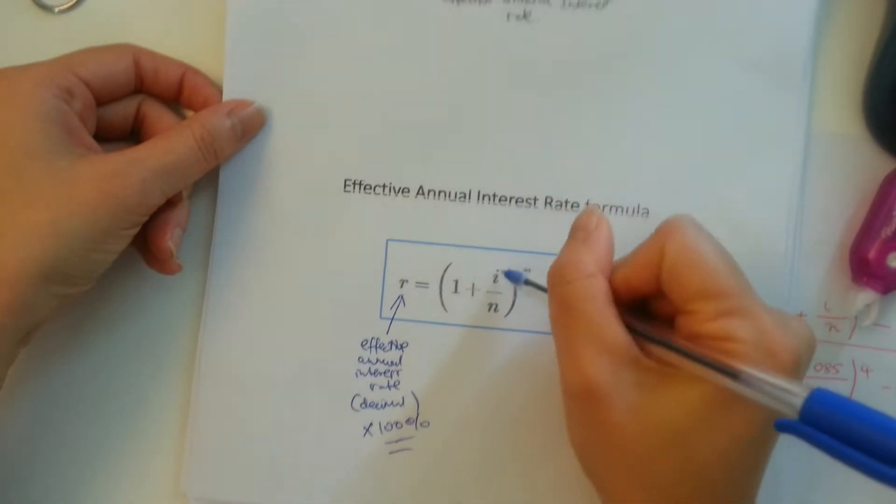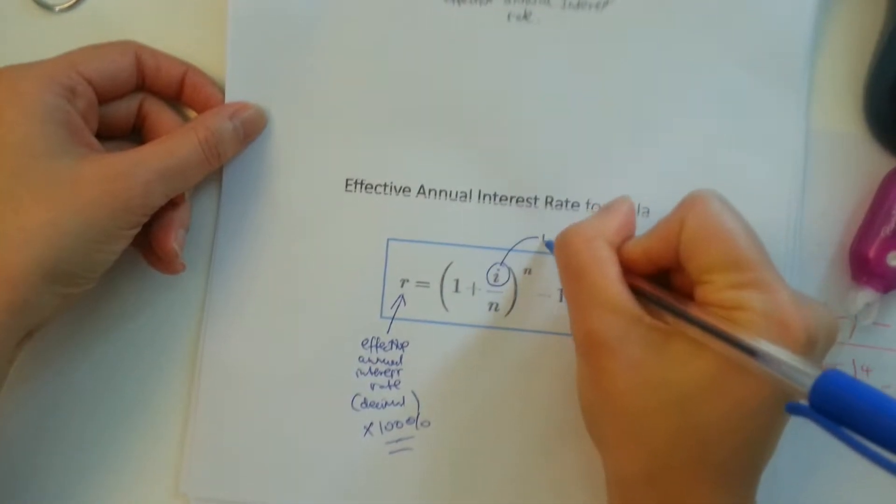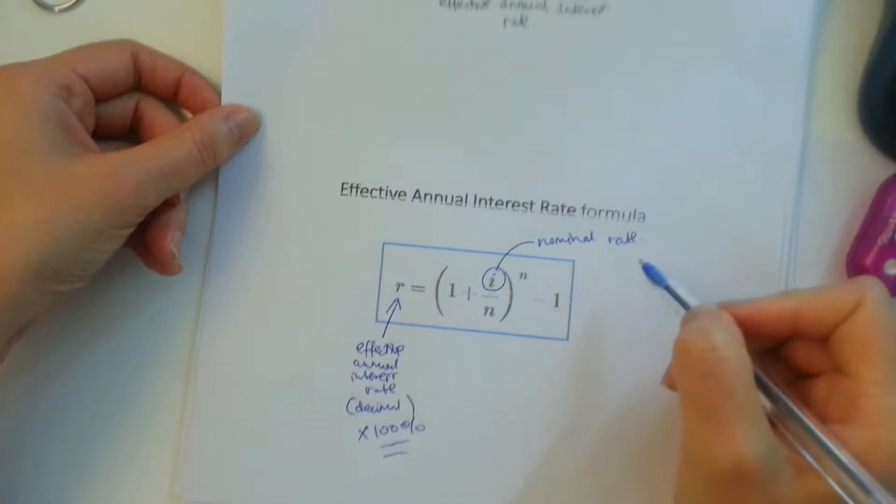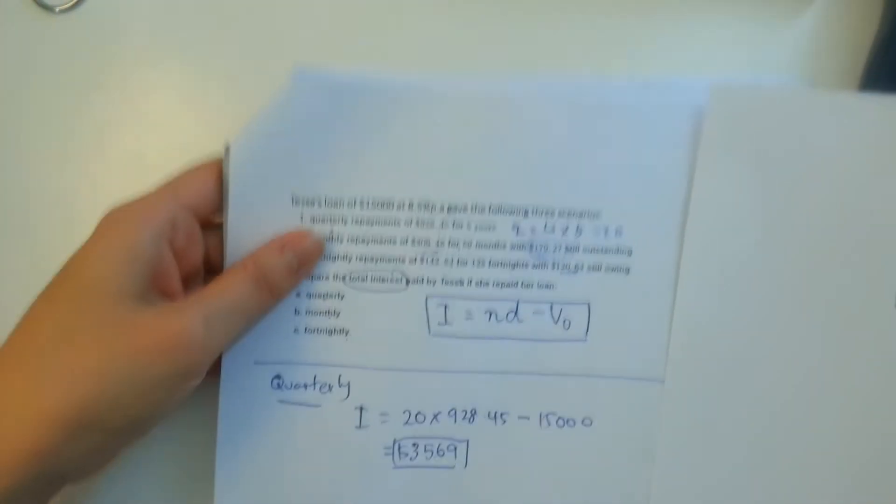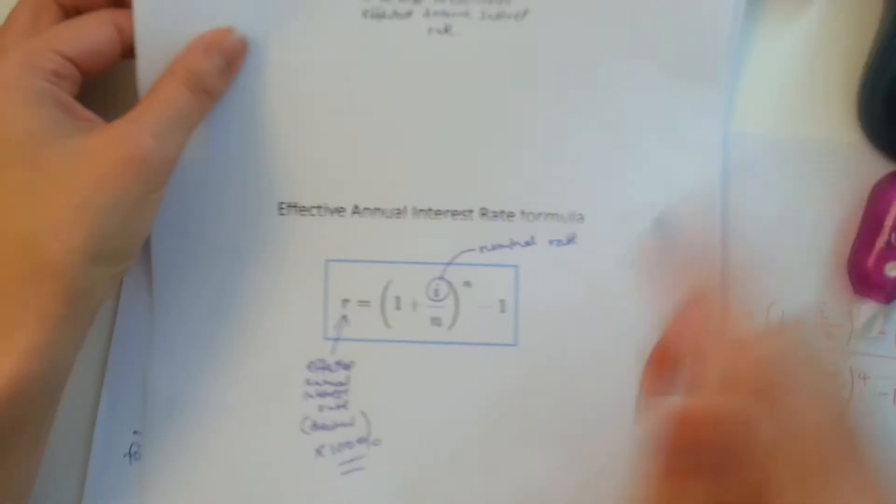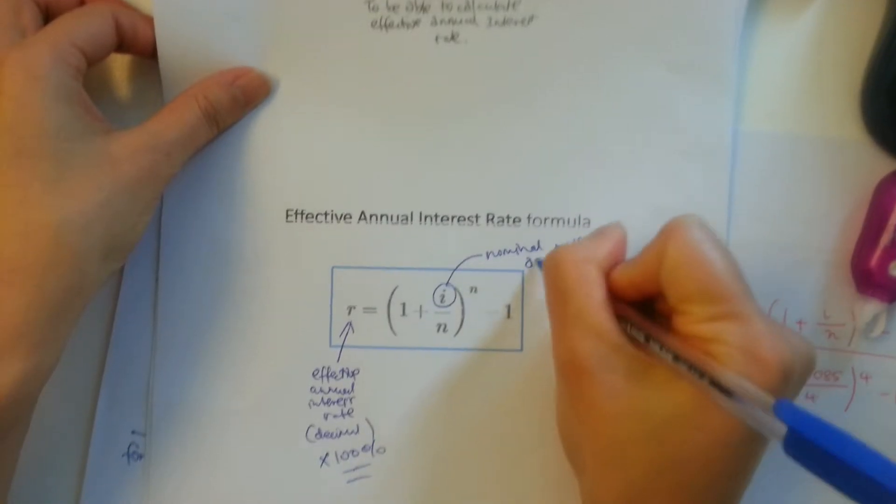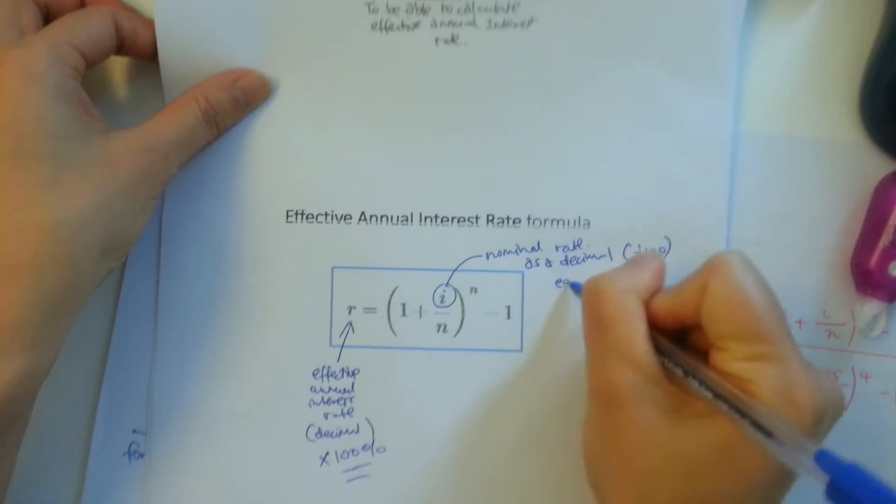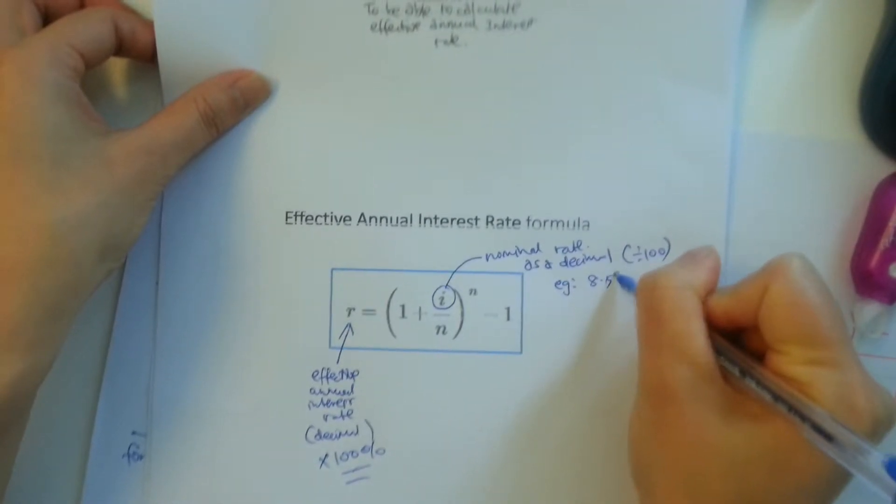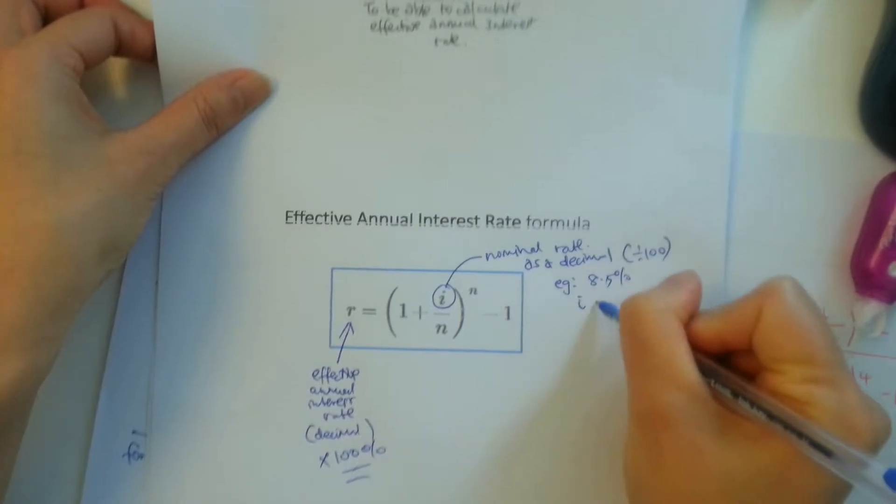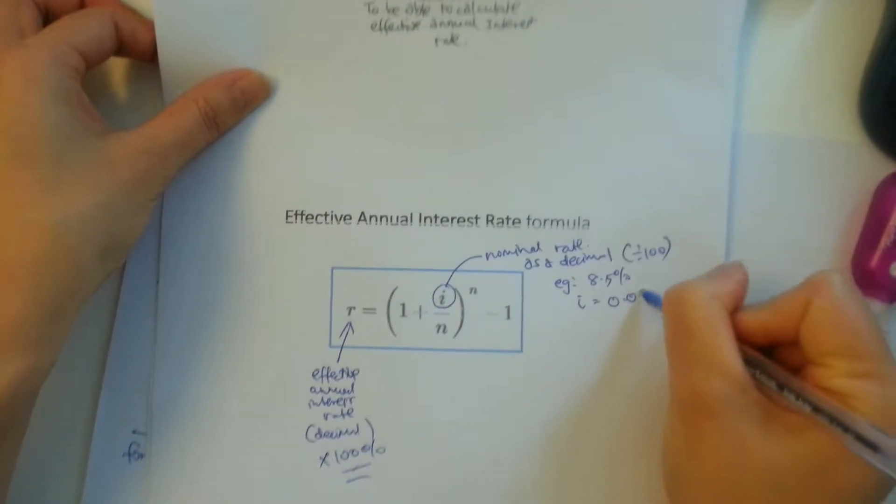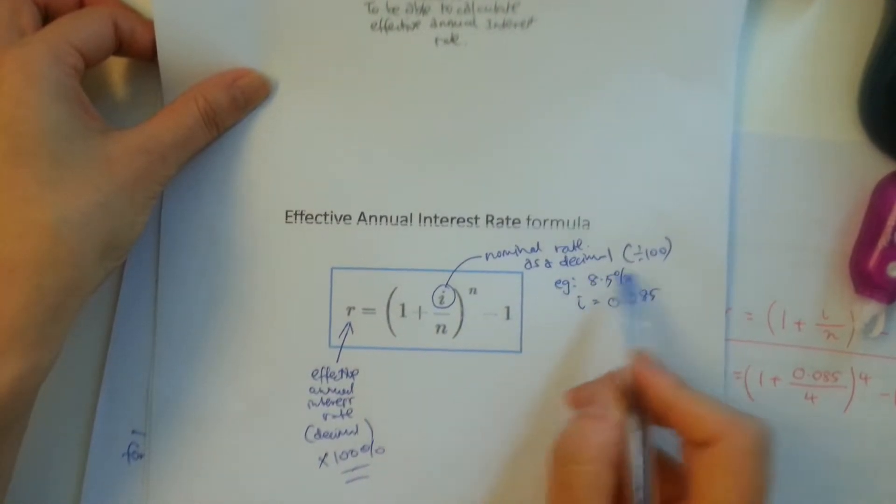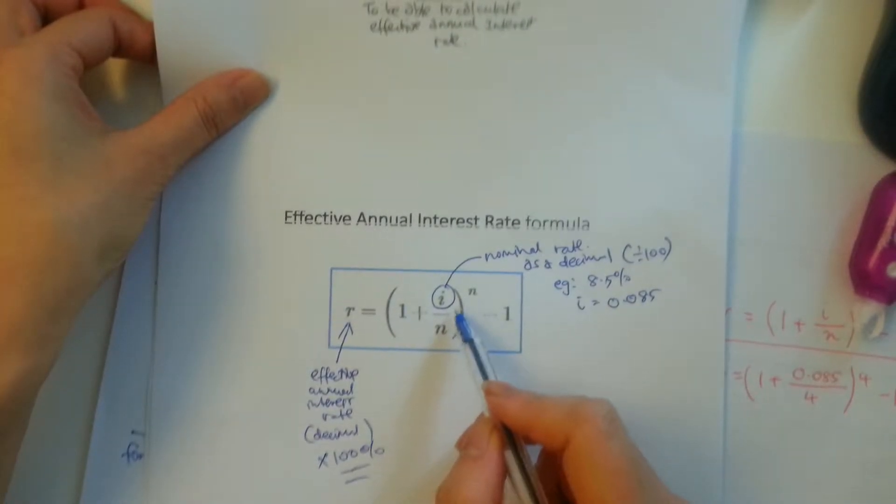Then we go 1 plus I. Now I is the nominal rate. So by nominal rate, it's the rate that has been stated. So for here, the nominal rate for this one would be 8.5. However, it's nominal rate as a decimal. So to get it into a decimal, you basically divide it by 100. So for example, 8.5%, the I is equal to 0.085. So the I is a nominal rate as a decimal. So you don't just put the percentage straight in as its figure.